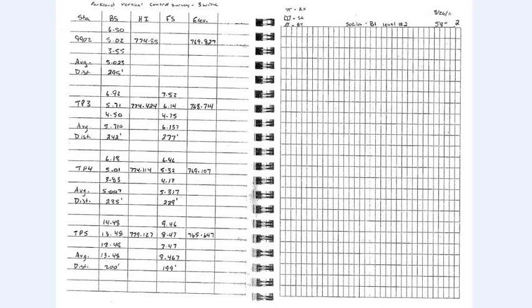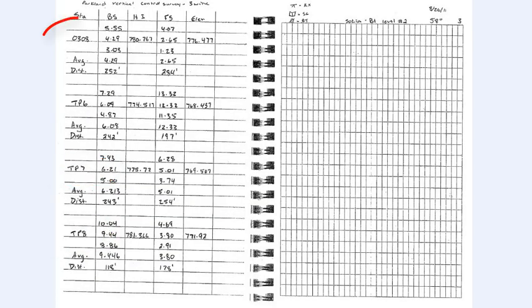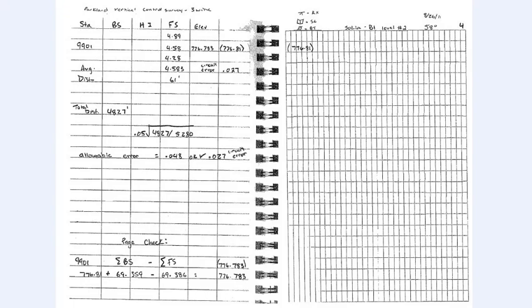Then we continue on the next page from 9902 down through turning points 3, 4, and 5 on to the next page and our next benchmark is 0308. Also its description shows on the first page of these notes. Then we continued our circuit from 0308 down through turning points 6, 7, and 8 and then closed our benchmark circuit on 9901. So we need to find the distances from the beginning of the circuit to points 9902 and 0308.